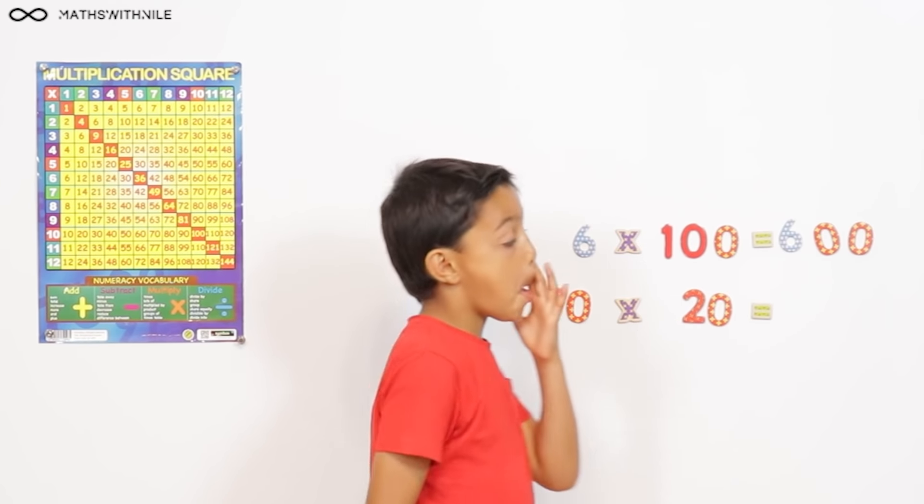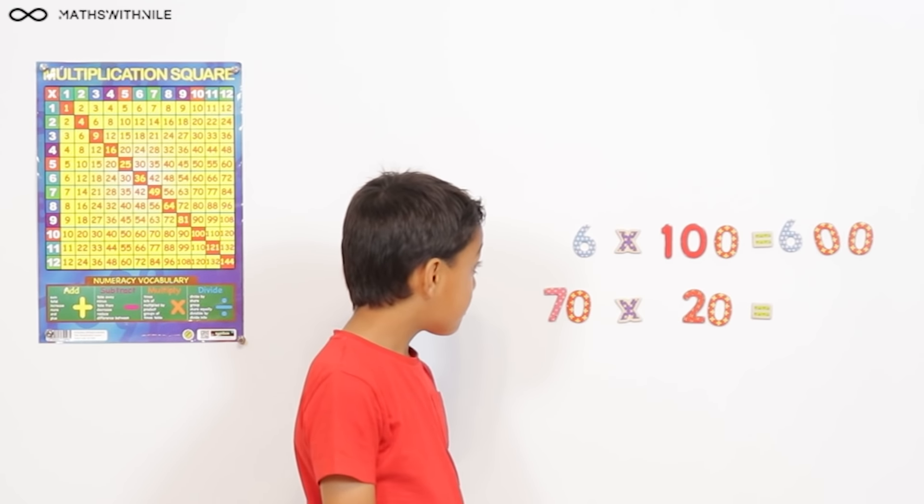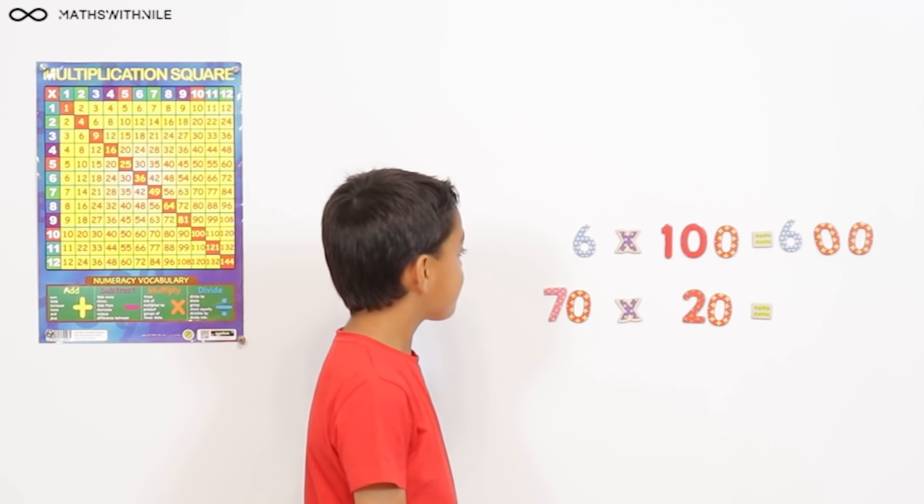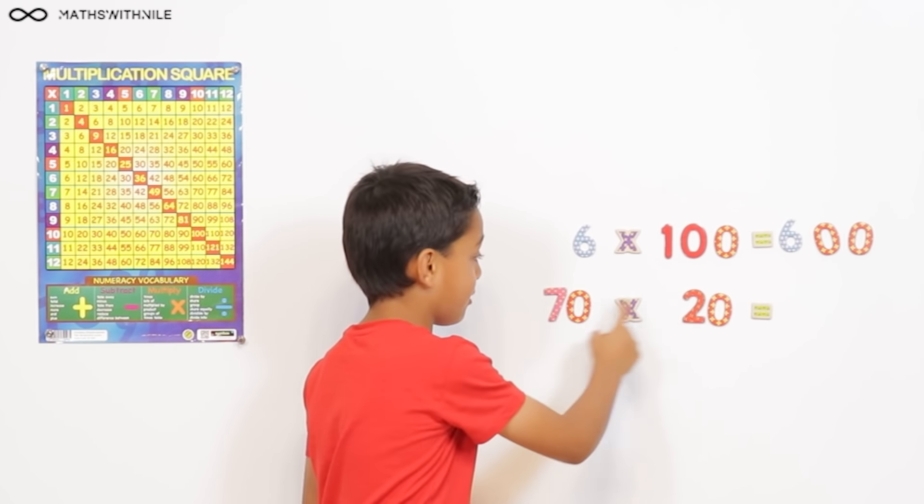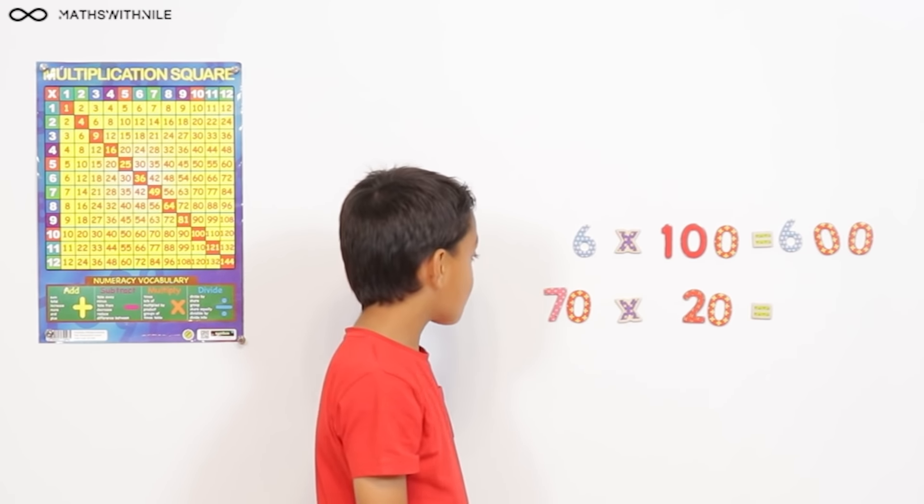So can you see that there are two zeros in the question and two zeros in the answer? Yeah. Does that give you a clue for working out the next question? Yes. What do you think we should do? We should do our 7 times 2 here and then add our zeros.